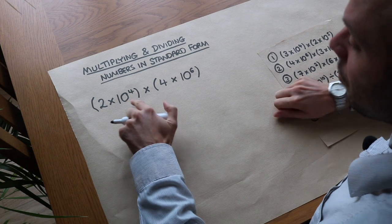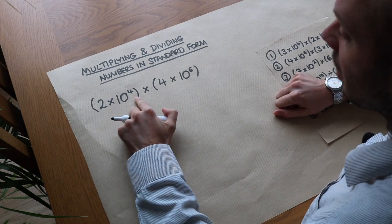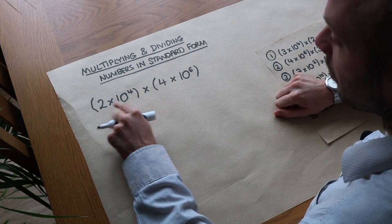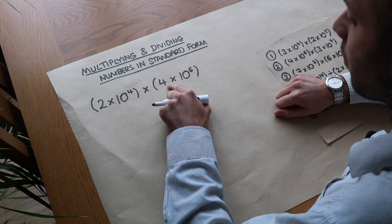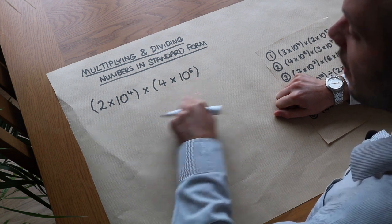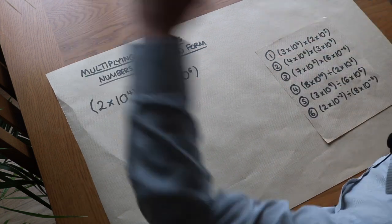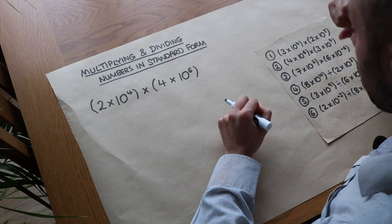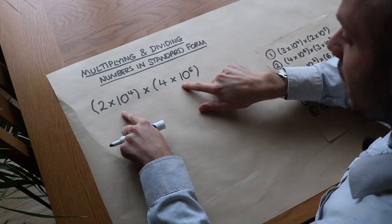Now we could just write each of the numbers out explicitly, convert them to normal numbers — so this would be 2 followed by 4 zeros and that would be 4 followed by 6 zeros — and then multiply them together and then convert back to standard form. But we can multiply these directly.